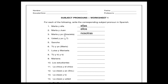Number four: Usted y yo. This yo is a bit indefinite — we don't specifically know if yo is masculine or feminine. So this could be either nosotros or nosotras. Number five: Sancho. Sancho is a masculine name, so the pronoun would be él.